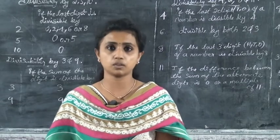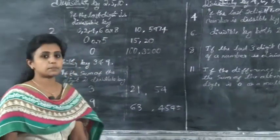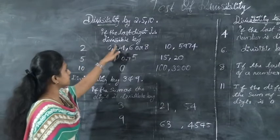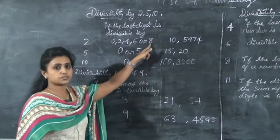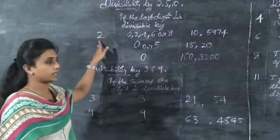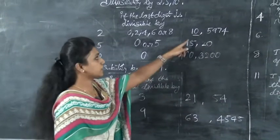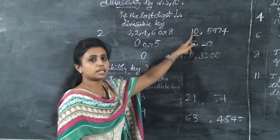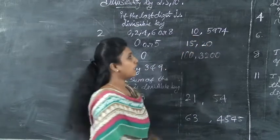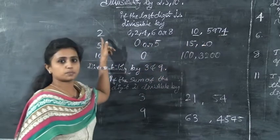A number is divisible by 2 means that if the last digit is 0, 2, 4, 6, or 8 — if the last digits are even numbers, the number is divisible by 2. For example, 10: the last digit is 0, so 10 is divisible by 2. You can completely divide it with remainder 0. Next, 5,974 — the last digit is 4, so we can clearly say that 5,974 is divisible by 2.